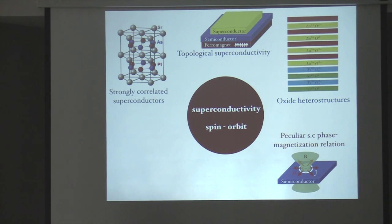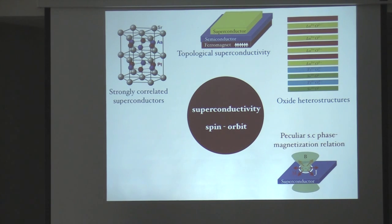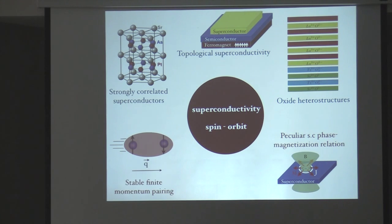One is basically the unique relations that are created, that are induced by spin-orbit coupling, between the phase of the superconducting order parameter. And the other one is the fact that this kind of relation is actually stabilizing a finite momentum pairing state in the superconductor, both in the presence of magnetic field, but also, as I will show, it can also occur without any magnetic field present in the system.